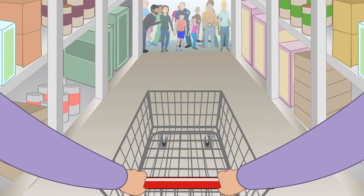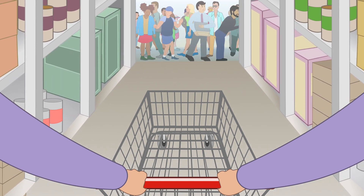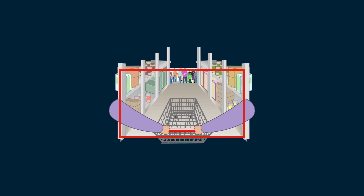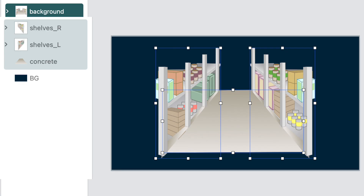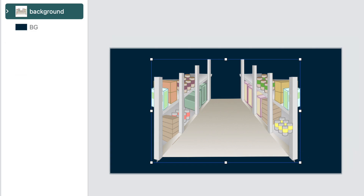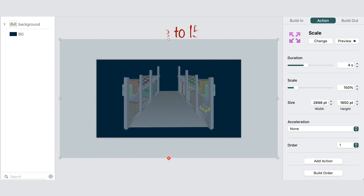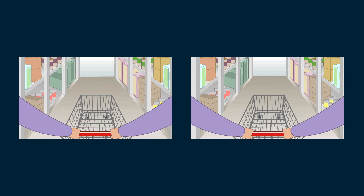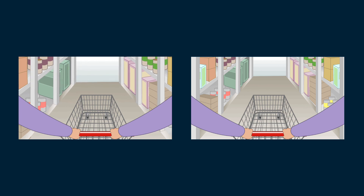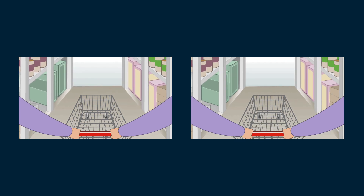Here's a shot from the cartoon you just saw. It looks like the guy with the shopping cart is moving up the aisle. But the cart isn't animated — the background is. To animate a background, select all of the background items and group them. Attach a scale animation action to the group so that it gets bigger — in this case, 150 percent of its original size. To enhance the effect, attach a move action to the background group. In this case, the path goes straight down for a short distance. Whatever actions you use, set the duration to many seconds to make it a slow motion shot, or set it to less than a second to make it fast.